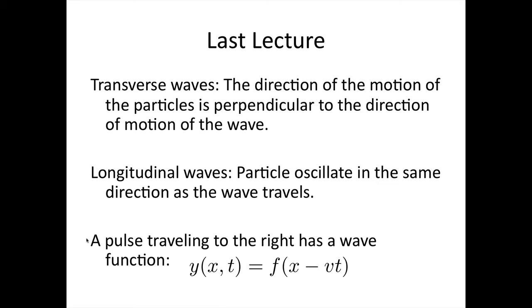We saw that transverse waves were ones in which the particles that make up the medium oscillate in the direction perpendicular to the direction that the wave is travelling in. In longitudinal waves, the particles oscillate in the same direction that the wave travels. We saw that a pulse travelling to the right has a wave function y(x,t) equals some function of x minus vt. This minus comes about as it's travelling to the right in the positive direction.